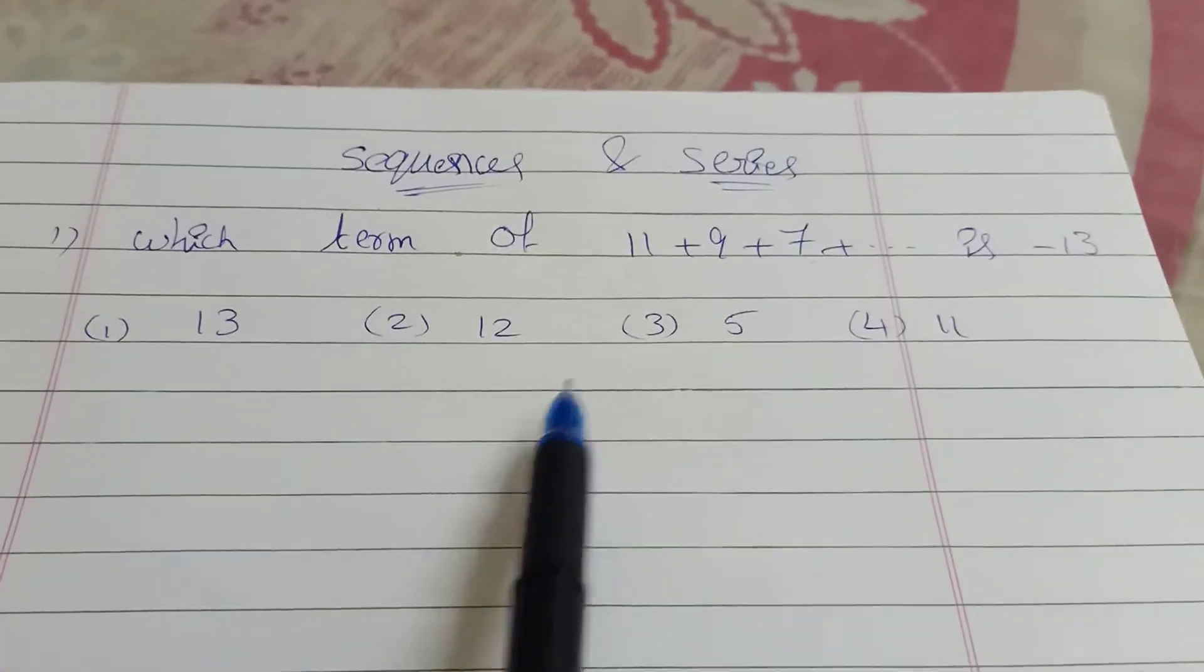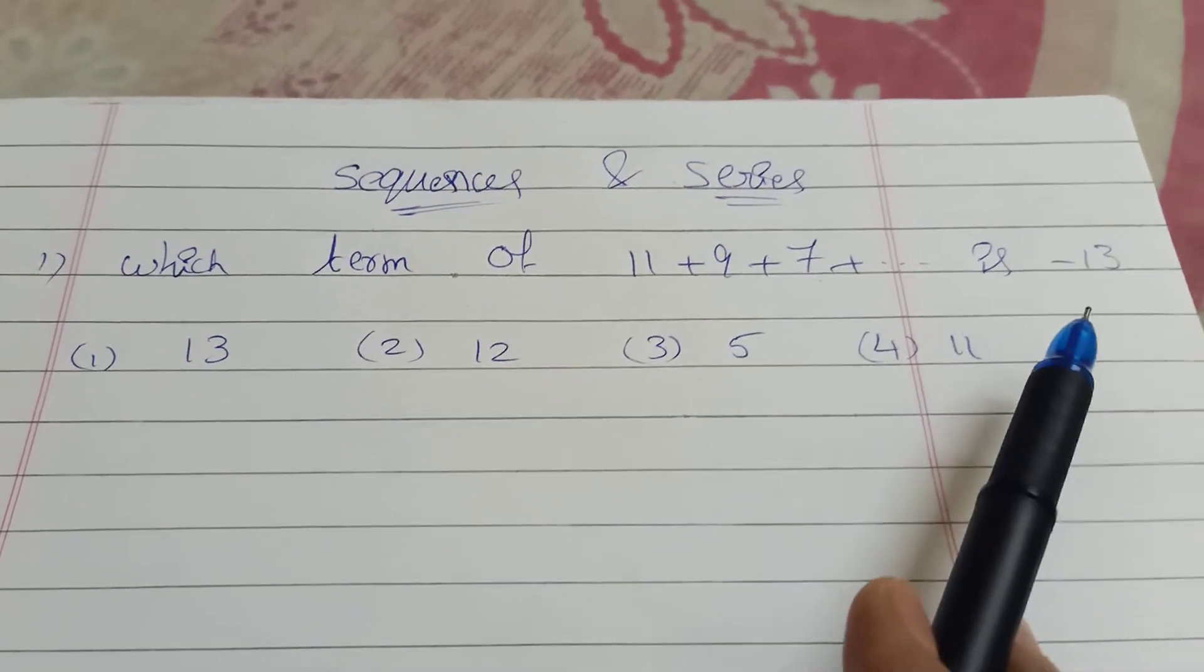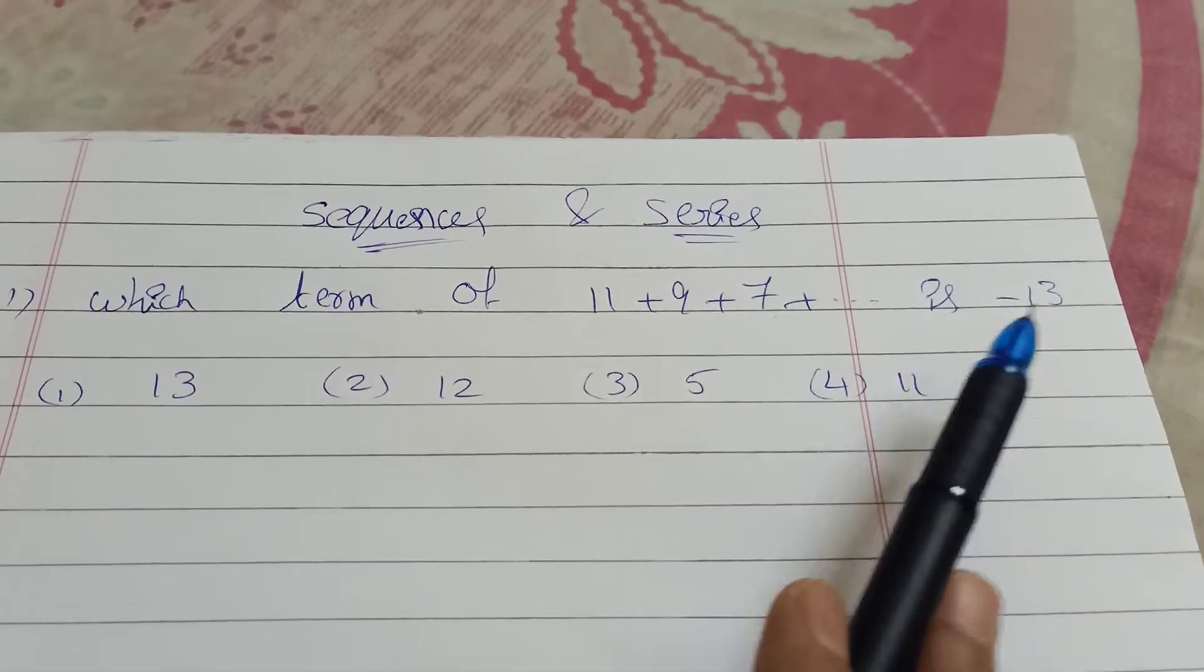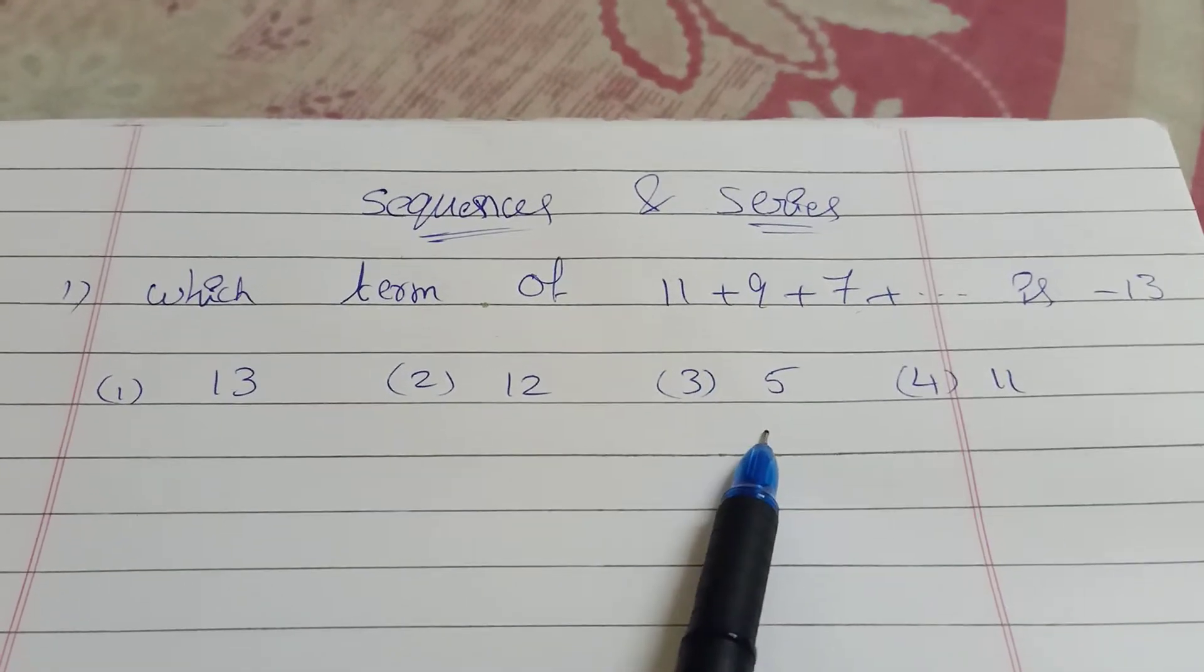Which term of 11 plus 9 plus 7 plus and so on is minus 13? The options are 13, 12, 5, and 11.